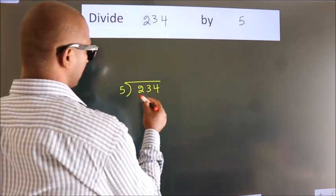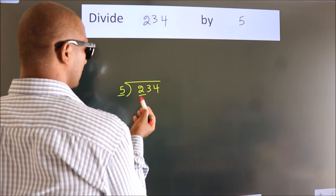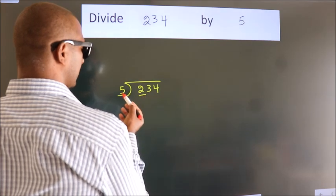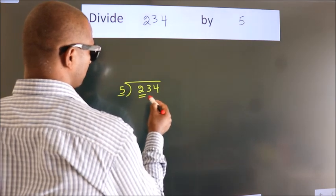Next, here we have 2, here 5. 2 is smaller than 5. So we should take 2 numbers, 23.